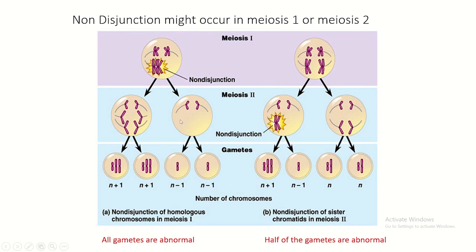In non-disjunction during meiosis I, all gametes will be abnormal. This is opposed to non-disjunction in meiosis II, where meiosis I was normal but sister chromatids fail to separate. We end up with some gametes with an extra chromosome, some missing a chromosome, and some normal - so 50% would be normal and 50% abnormal.